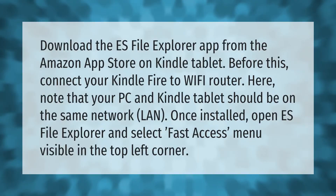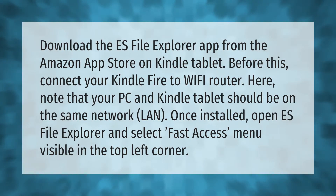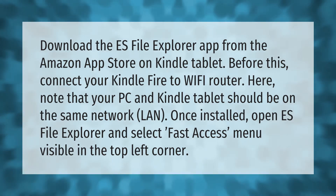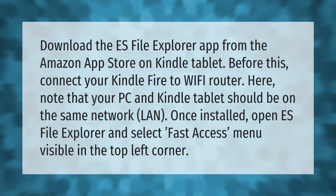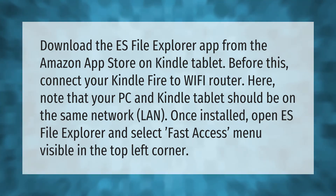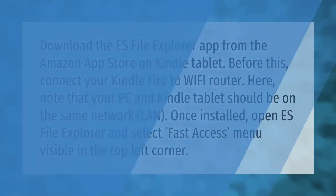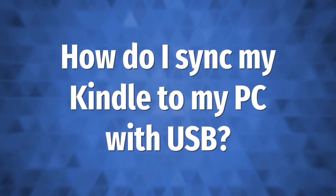Download the S File Explorer app from the Amazon App Store on your Kindle tablet. Before this, connect your Kindle Fire to a Wi-Fi router. Note that your PC and Kindle tablet should be on the same network (LAN). Once installed, open S File Explorer and select the Fast Access menu visible in the top left corner.